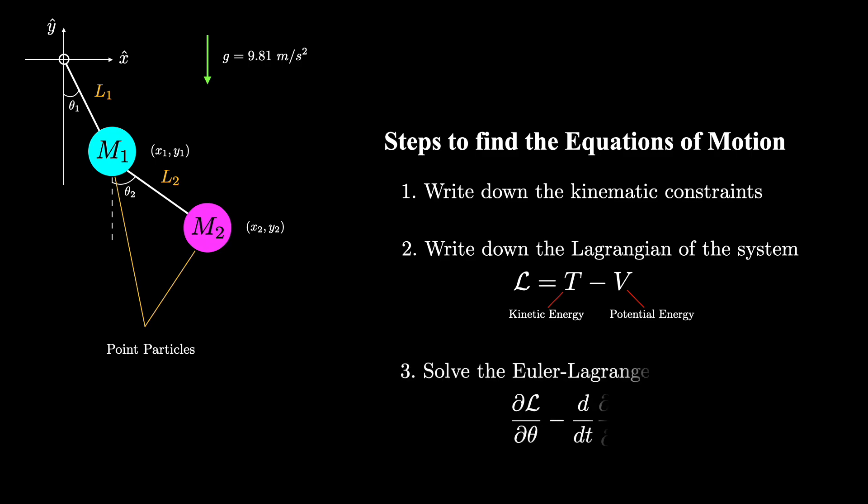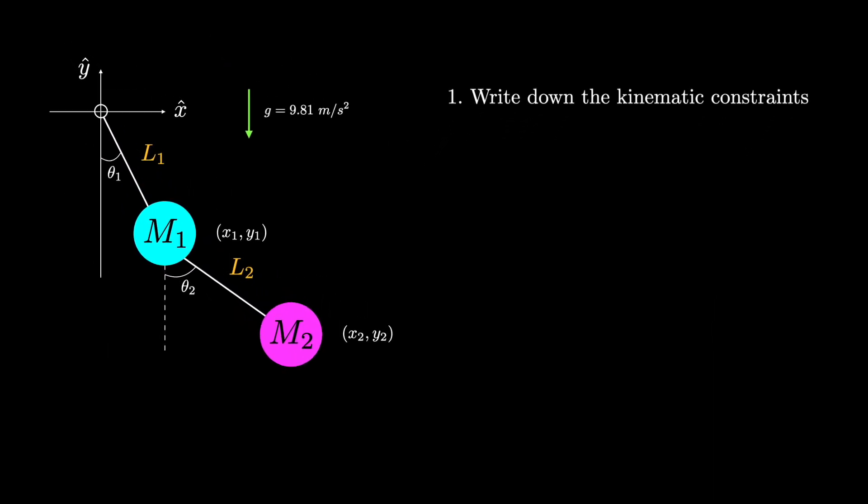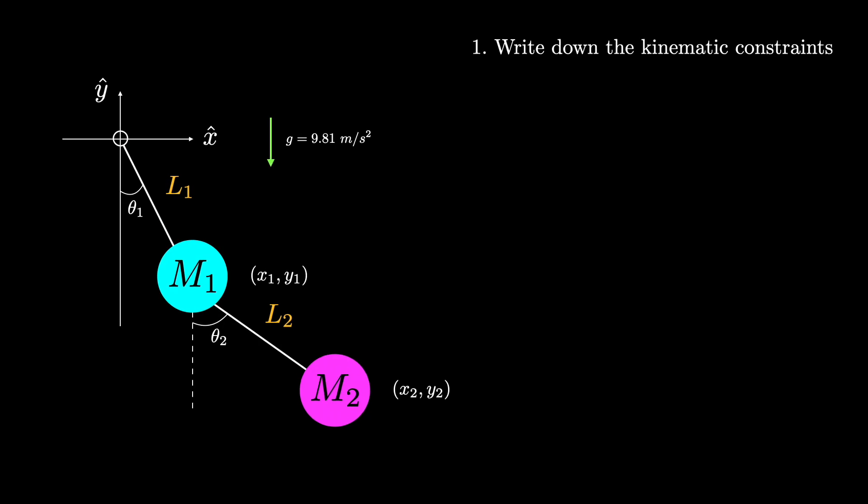Finally, in step three, we'll use the Lagrangian to solve the Euler-Lagrange equation. The result will be the equations of motion that describe the trajectory of this system. So let's write down the kinematic constraints. By applying some trigonometry, we can write the cosine of theta one and the sine of theta one. We can also do the same for theta two.